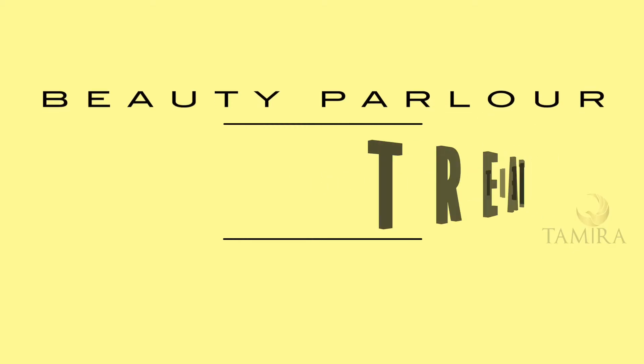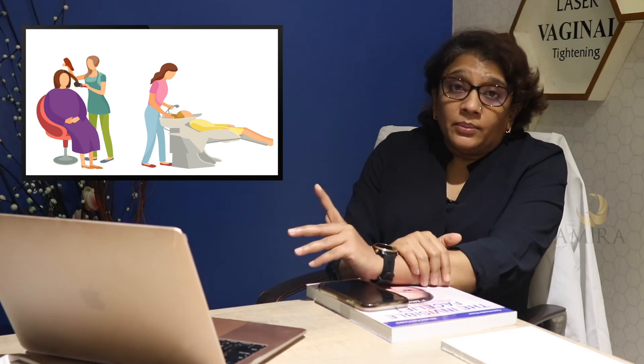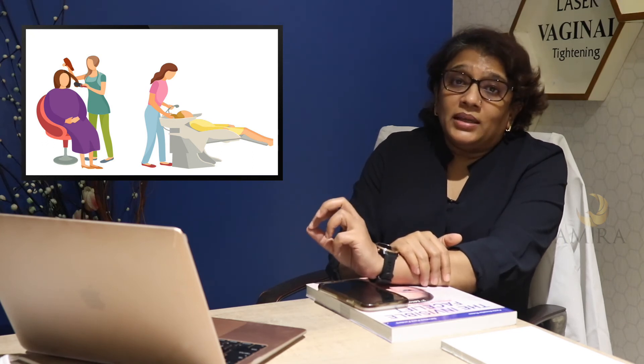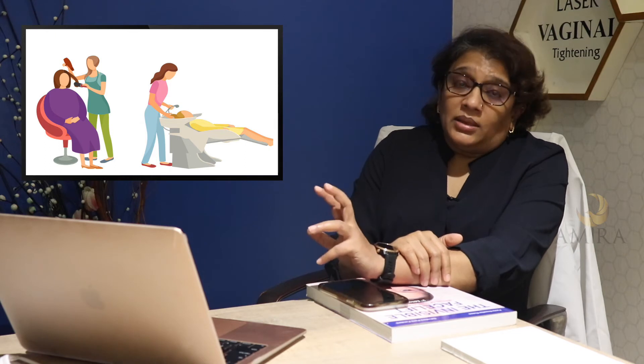That is what we call telogen effluvium. When it comes to beauty parlour treatments like straightening or perming, the mechanical properties of the hair are altered. Various chemicals are used to denature the sulfur bonds and disintegrate them, causing the hair to lose its natural texture — so curly hair becomes straight or straight hair becomes curly.